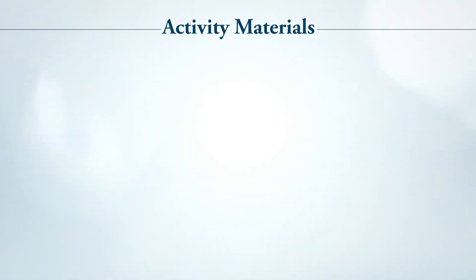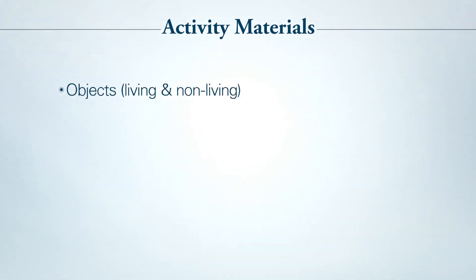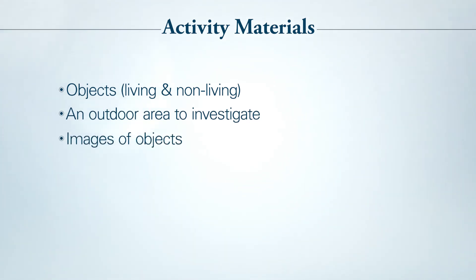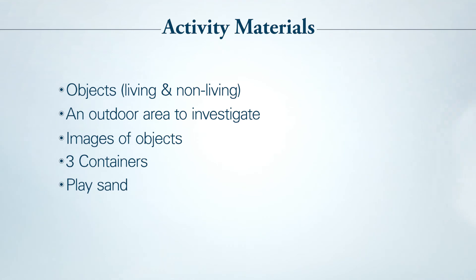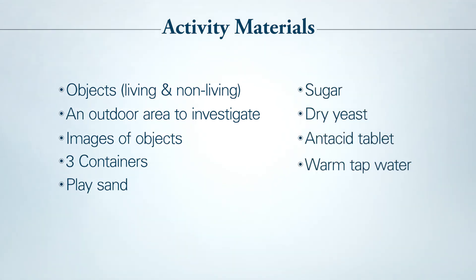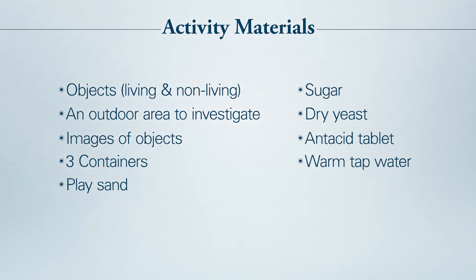First, you'll need to help gather all the materials you see on the screen before we can start. The activity materials include objects — living and non-living — an outdoor area to investigate, images of objects, three containers, play sand, sugar, dry yeast, an antacid tablet, and warm tap water. Parents and caregivers, if you can't find play sand, try small pebbles, gravel, or something similar instead.